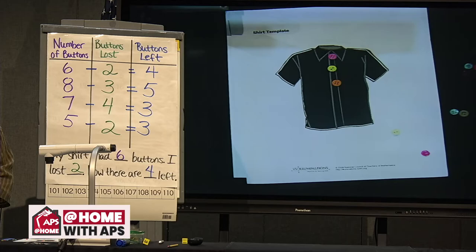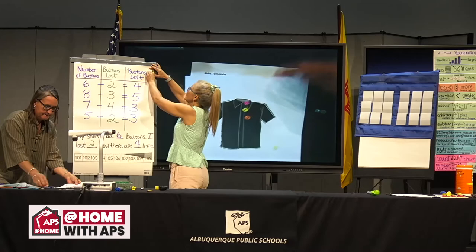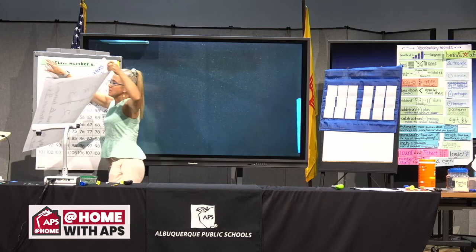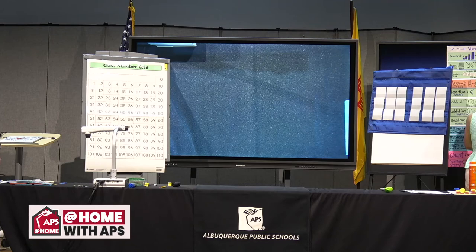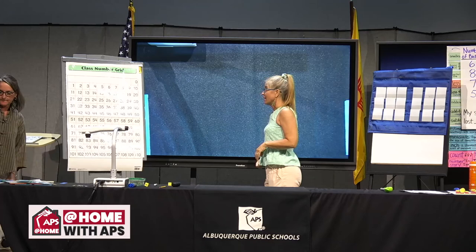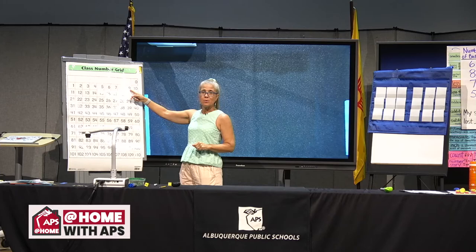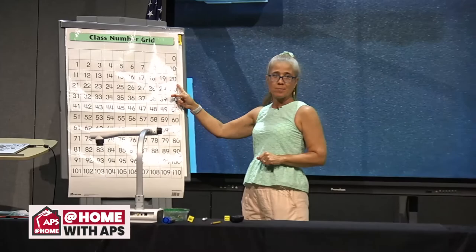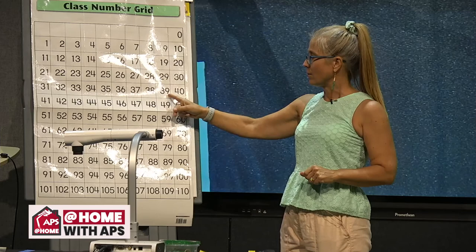We've got a few minutes left for a game. We've talked about crossing the decade — going from one family to the next family. All those numbers go from a number ending in nine to the next family starting with zero: 19, 20; 29, 30; 39, 40; 49, 50; 59, 60; 69, 70; 79, 80; 89, 90; 99, 100.